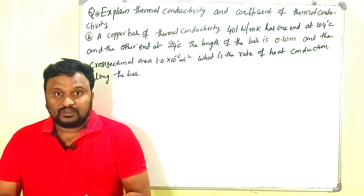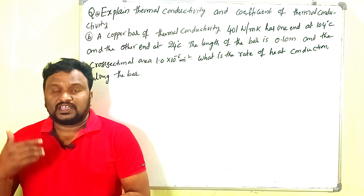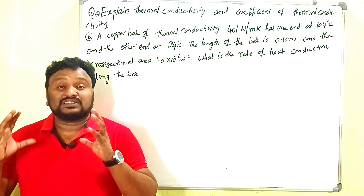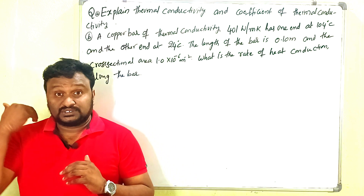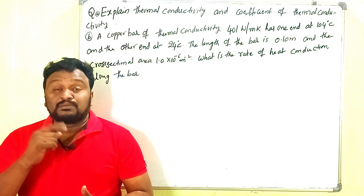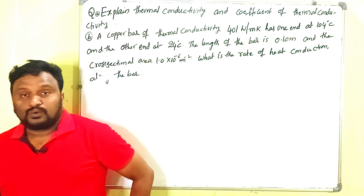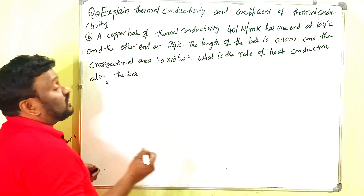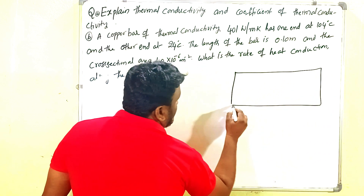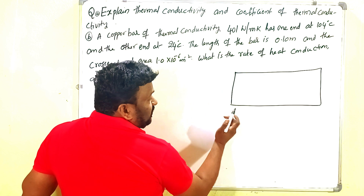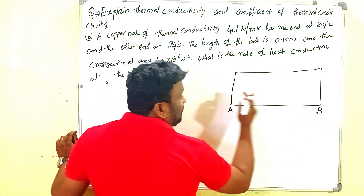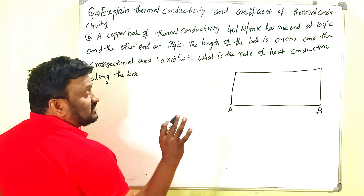So what is meant by thermal conductivity? We already know that heat can be transferred in three ways: conduction, convection, and radiation. The capability or ability of a body to transfer heat through it is called thermal conductivity. Specifically, the ability of the body to transfer heat from one end A to another end B is what we call thermal conductivity.